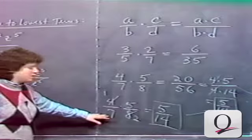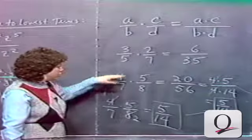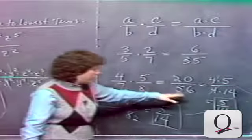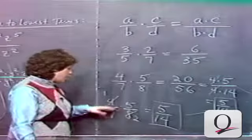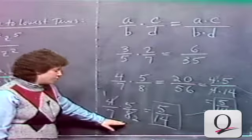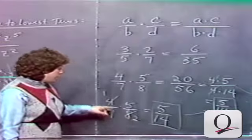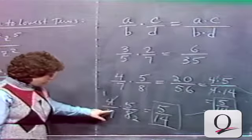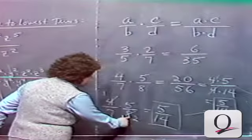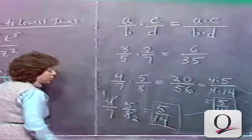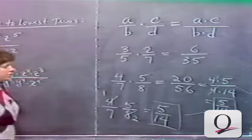Most times it's easier to cancel before multiplying. When multiplying fractions, it's to your advantage to first look for any canceling that can be done. In this case we divide numerator and denominator by 4 — using a denominator from a different fraction is perfectly fine — giving 1 times 5 over 7 times 2, which is 5 fourteenths.